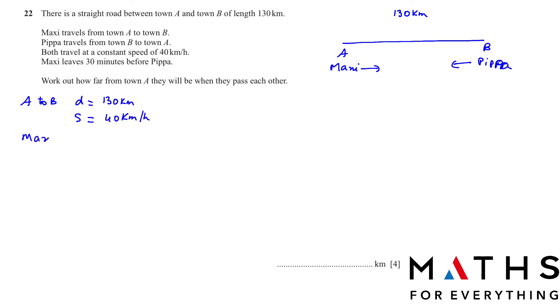Maxi leaves 30 minutes before Pippa. So the time taken by Maxi: If Maxi leaves 30 minutes before Pippa, how much distance did Maxi travel? This is minutes and we are working with hours, so we have to change the minutes to hours by dividing by 60. You will get 0.5. So we know the speed, we know the time, and we use the triangle.